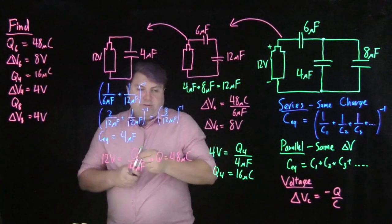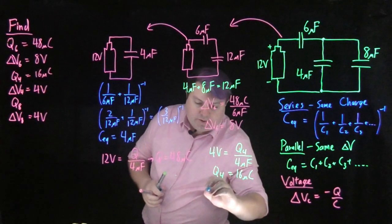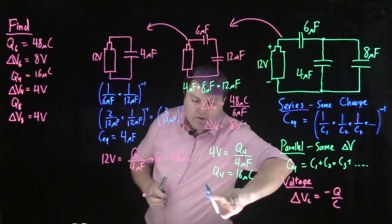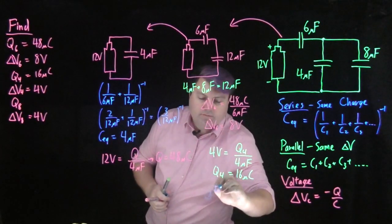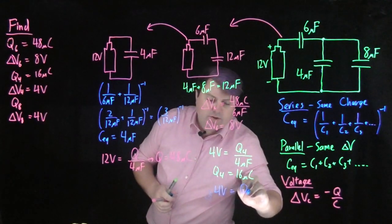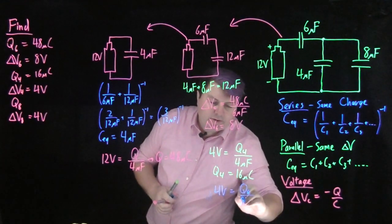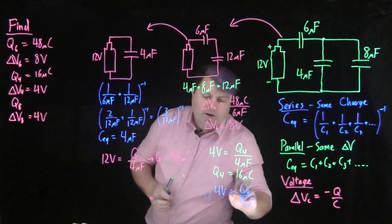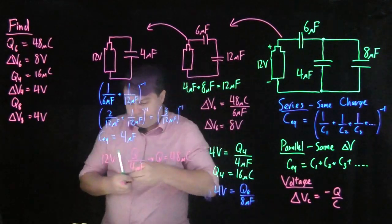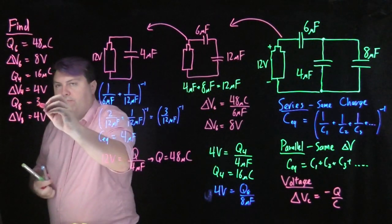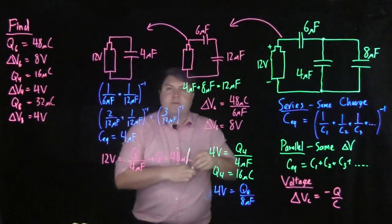And then lastly, I can do that for my Q8. So I have 4 volts is the charge over the 8 microfarad capacitor times 8 microfarads. 4 times 8 gets me 32 microcoulombs.